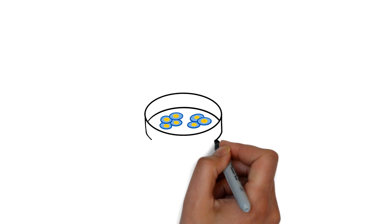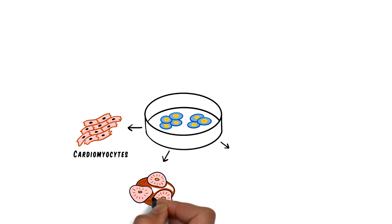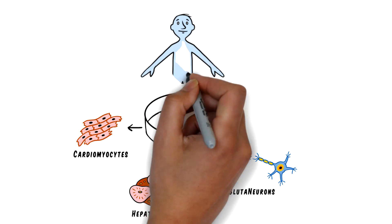iCell Glutoneurons are human biology in a dish. They are efficient, robust and relevant.